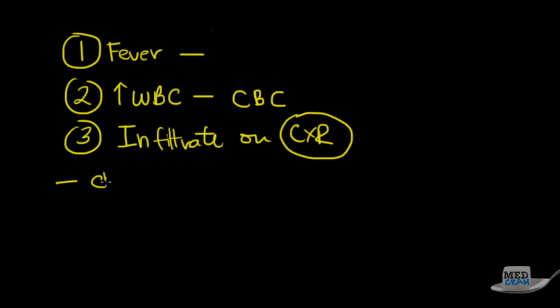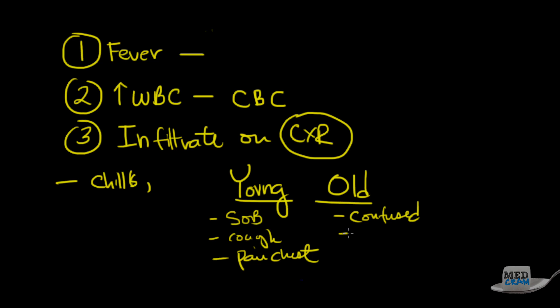What are the other signs that we'll see? People will have fevers, will have chills. In the young population, you're more likely to see things like shortness of breath, cough, in other words respiratory symptoms, pain in the chest. Whereas the old might just be confused, sleepy. In other words, more non-specific symptoms in the elderly population, whereas more respiratory specific in the younger population.